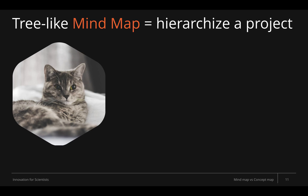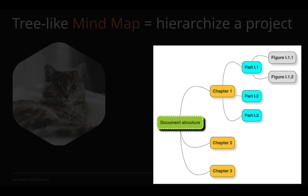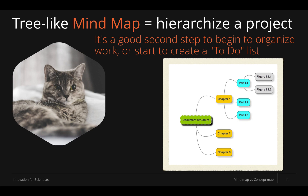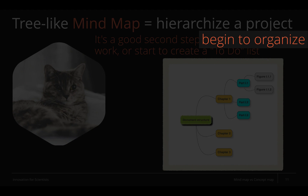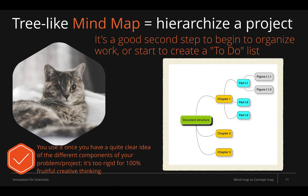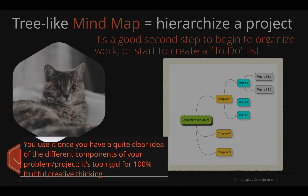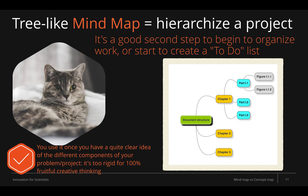The tree-like mind map is used when you need to organize a project. On this figure, unlike the previous one, you can see a very obvious structure. It's a really good second step when you begin to organize your work or when you start to create a to-do list. You will use it once you have a quite clear idea of the different components of your problem or project. It's too rigid for fully fruitful creative thinking, but it's very useful when you start to organize your ideas or tasks.